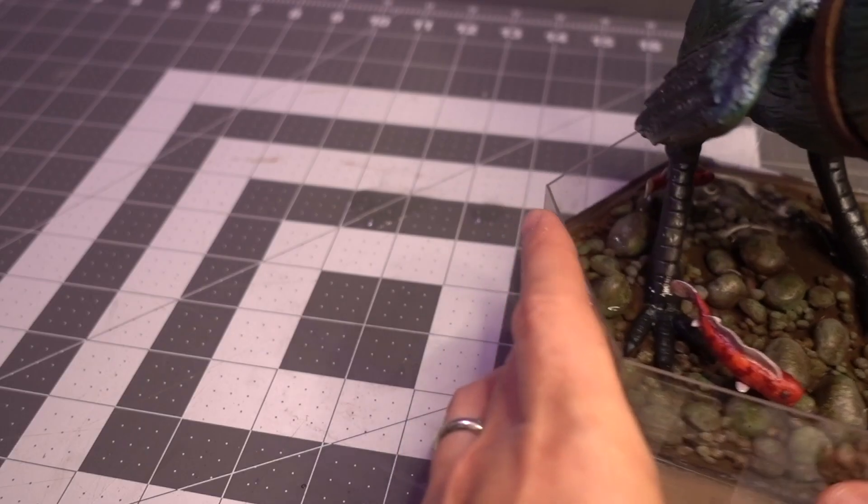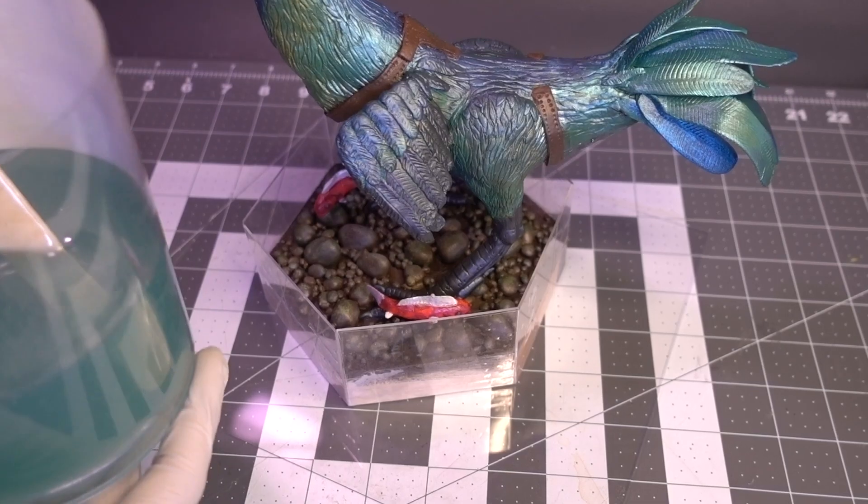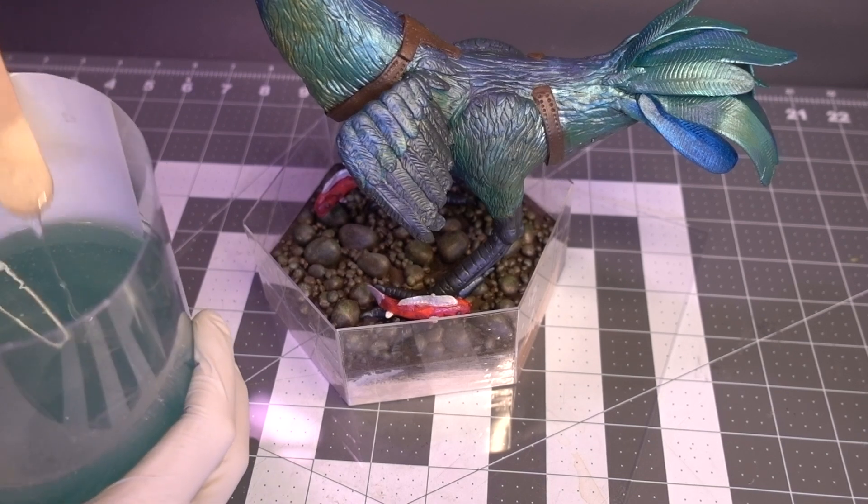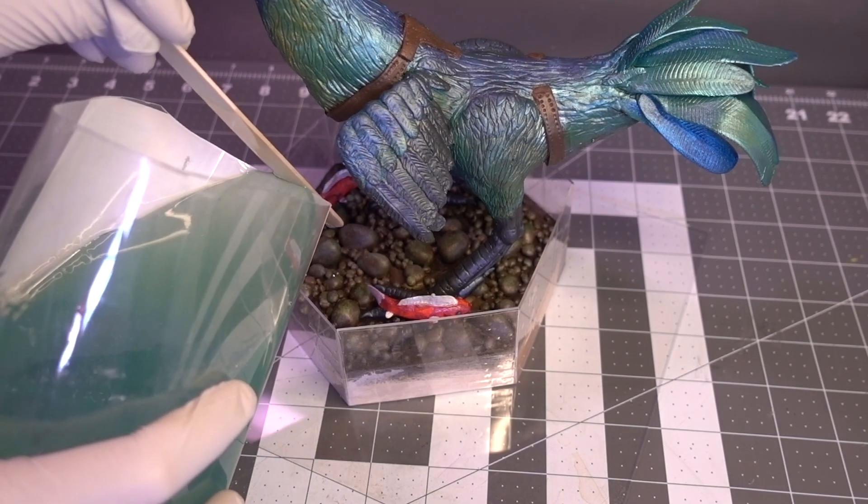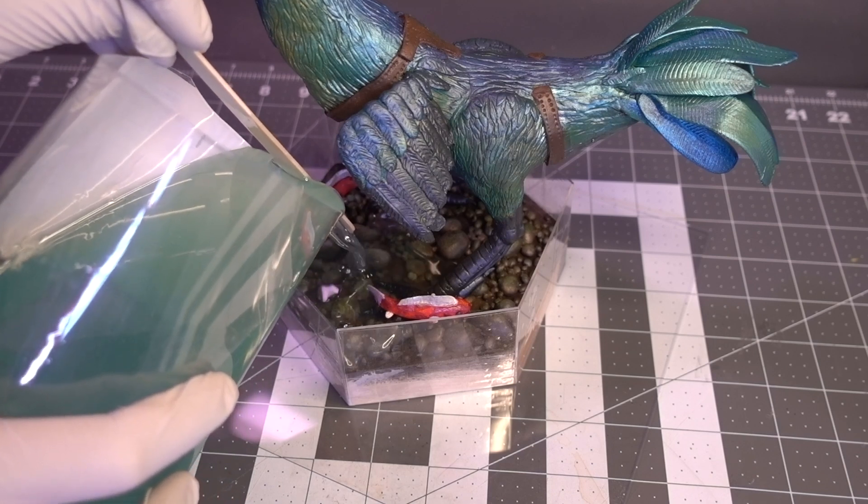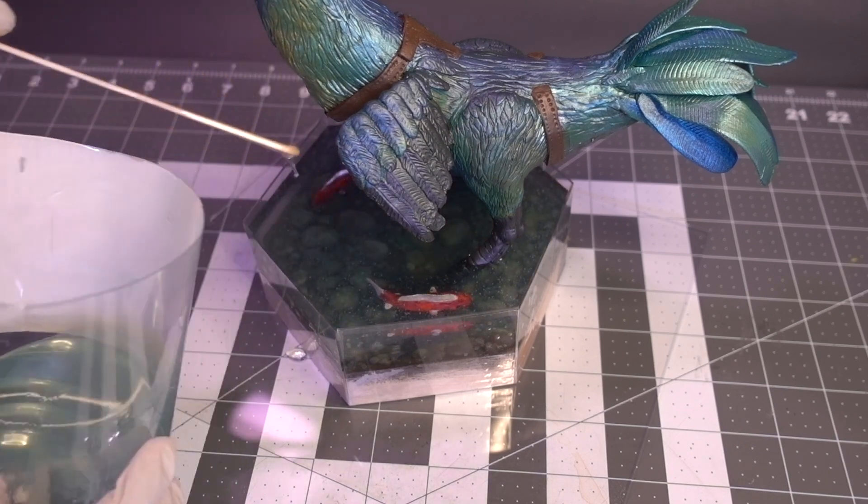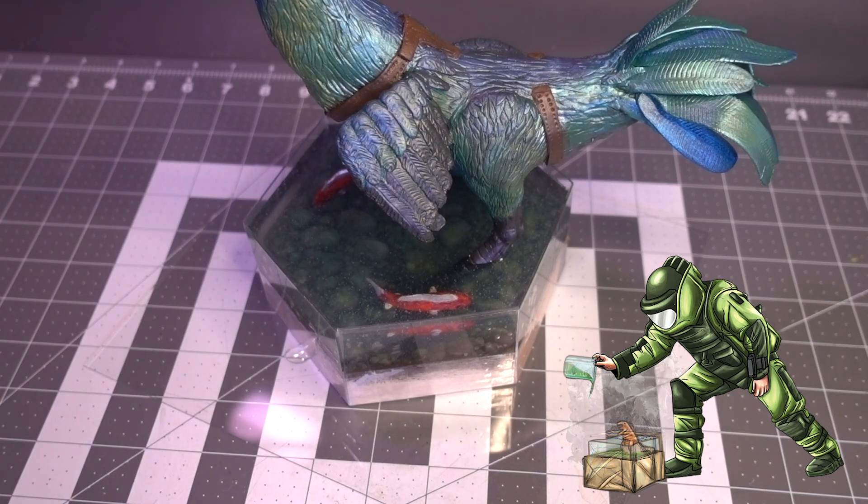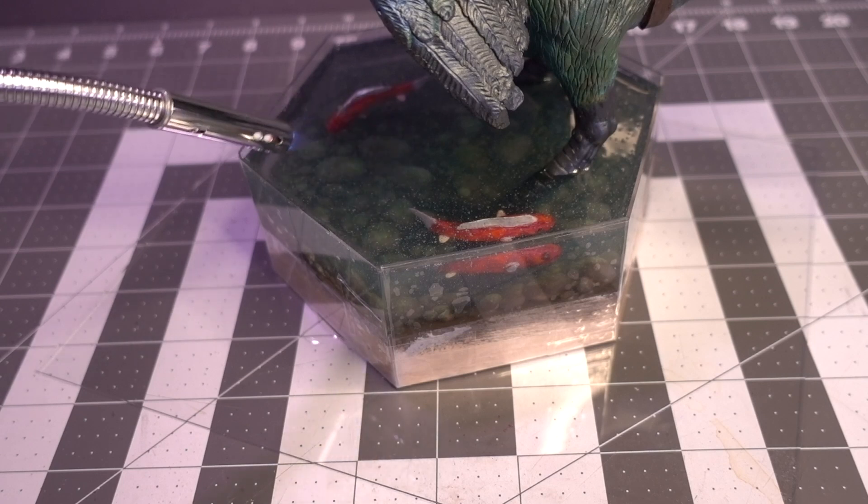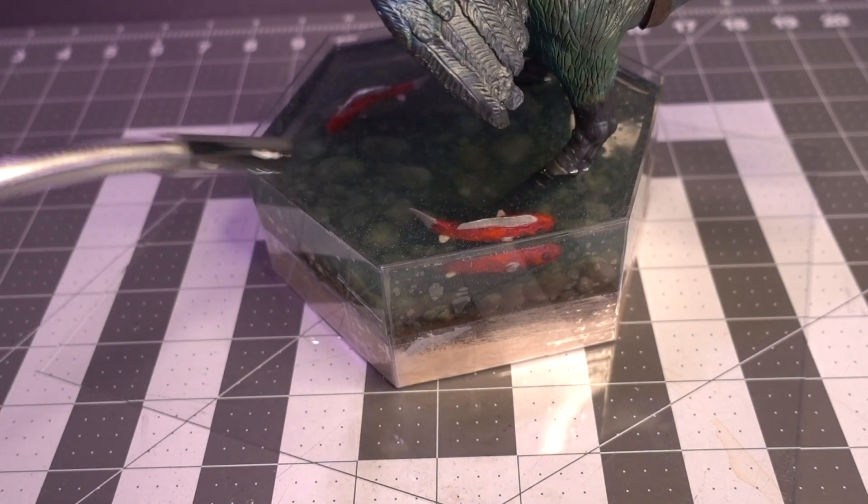If any of you viewers out there are looking for an extreme hobby to really get your adrenaline pumping, try pouring resin. It ranks right between bomb defusal and skydiving. And amazingly, it worked. No giant bubbles, no exothermic reaction, no leaks, no floaters. In my relief, I took a giant breath and got a little lightheaded from inhaling all those epoxy fumes. The resin needed a day to set fully, so I used that time to make tiny accessories for Mabbit.